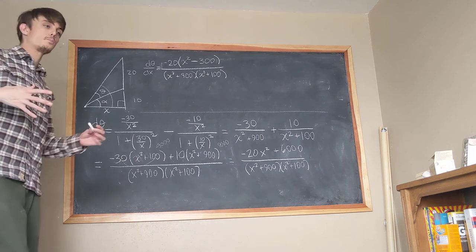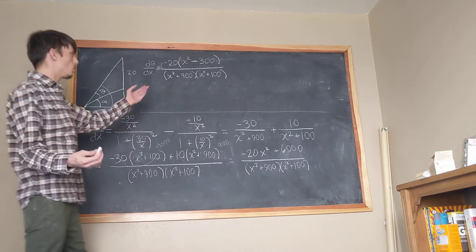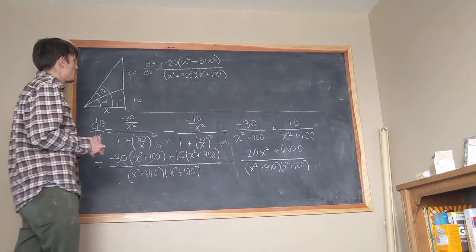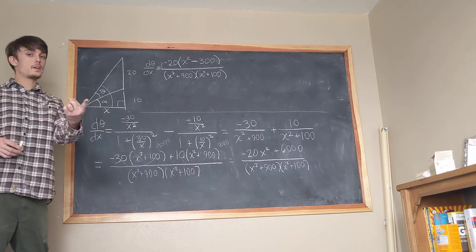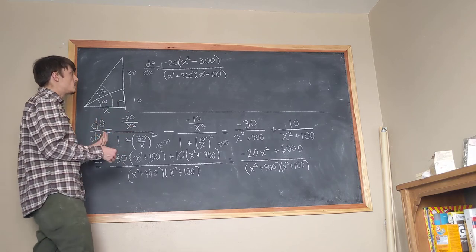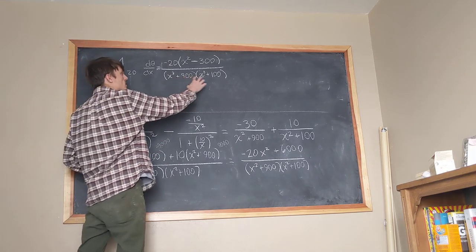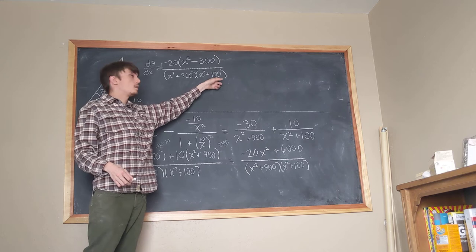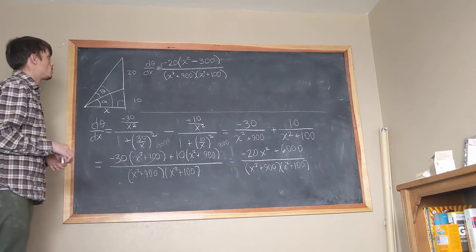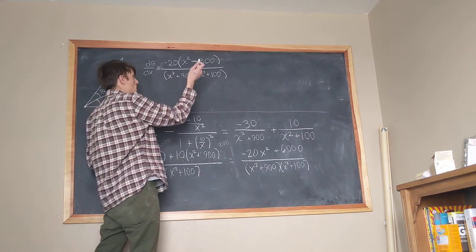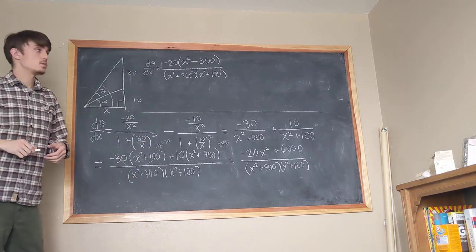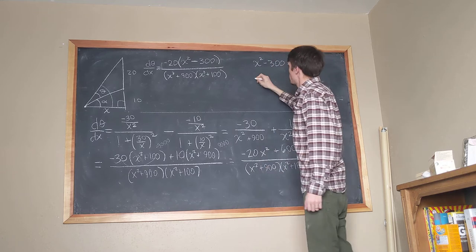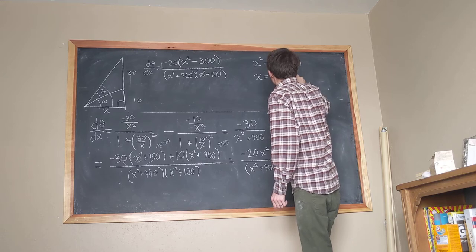The only critical points come from the numerator equaling zero. Since the denominators are always positive, we set x² minus 300 equals zero. There's no place where the derivative fails to exist, so all critical points come from this equation.